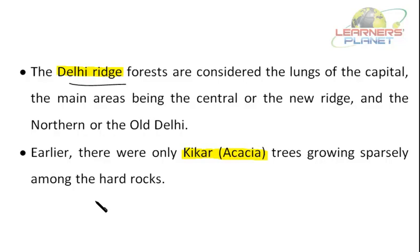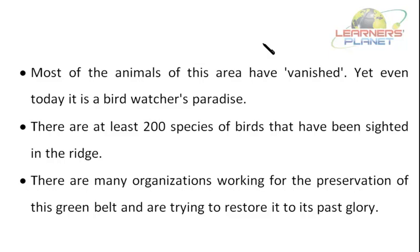However, the ridge is under severe threat as it is being gradually destroyed over the years, mainly due to increasing human activities. Most of the animals of this area have vanished totally. Even today, it is a bird watcher's paradise because there are at least 200 species of birds that have been sighted in the Delhi Ridge. There are many organizations working for the preservation of this green belt and trying to restore it to its past glory. These organizations involve citizens to participate in tree planting programs, greening of colonies, stopping felling of trees, and discouraging the use of plastic bags.